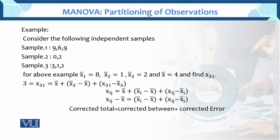In this example, we have considered the following independent samples. We have three independent samples: sample 1, sample 2, and sample 3. x̄₁ comes from sample 1, x̄₂ from sample 2, and x̄₃ from sample 3.